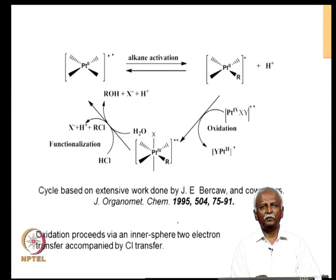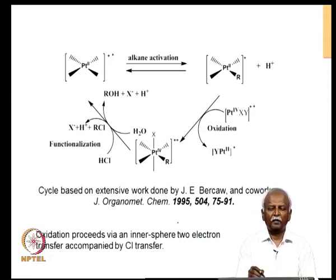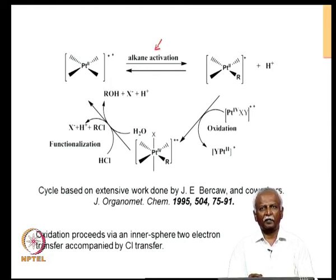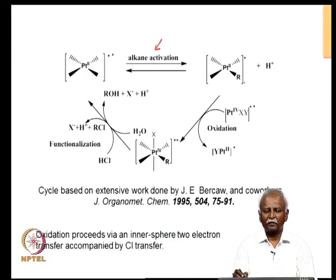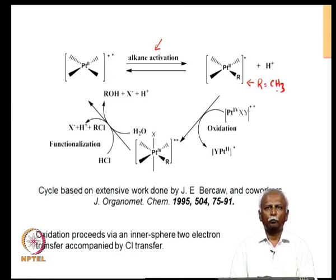The mechanism of this reaction was solved much later by workers in the west. Platinum 2 — we can ignore the ligands which are fairly labile — can react with the alkane. Apparently it interacts with the alkane in such a way that you now form a platinum-carbon bond. In this case, if methane is involved, R equals CH₃. So you form a platinum-methyl bond and release a proton into the medium.